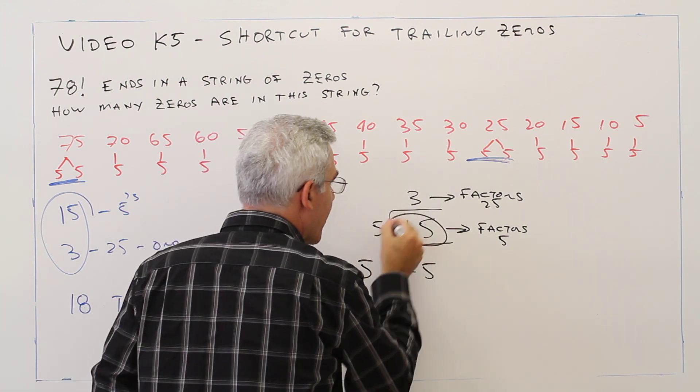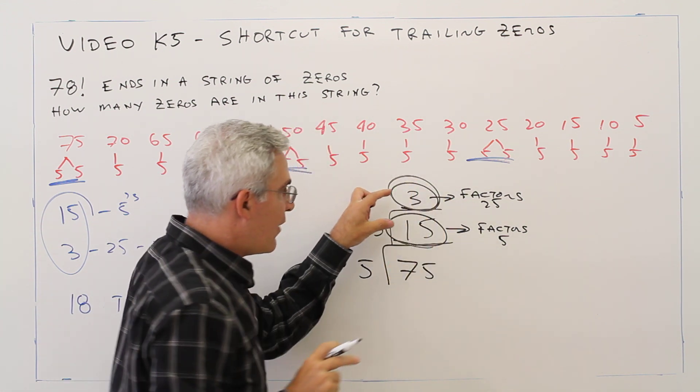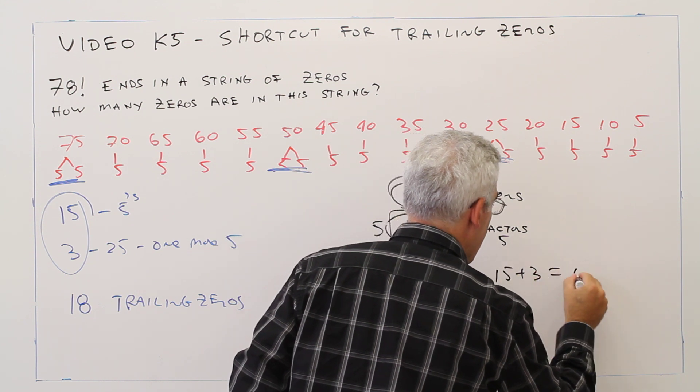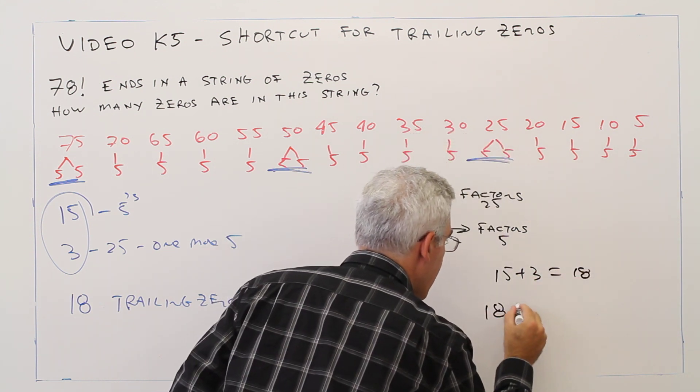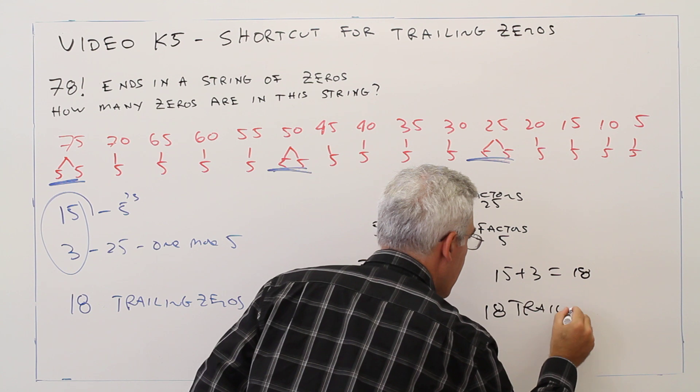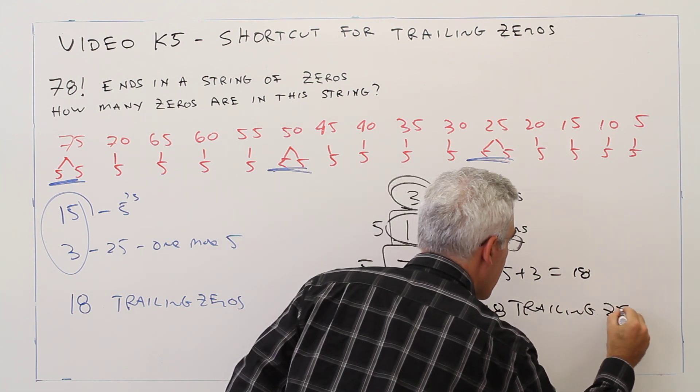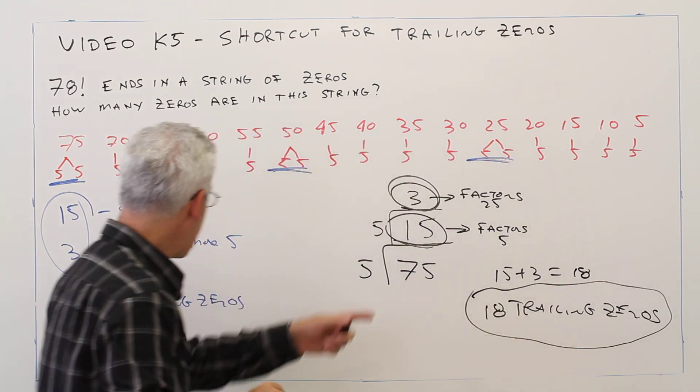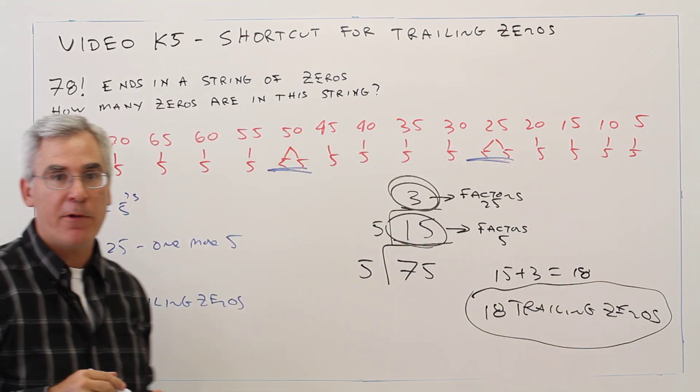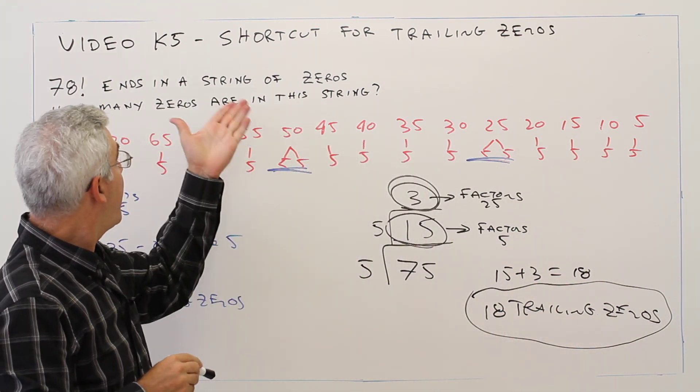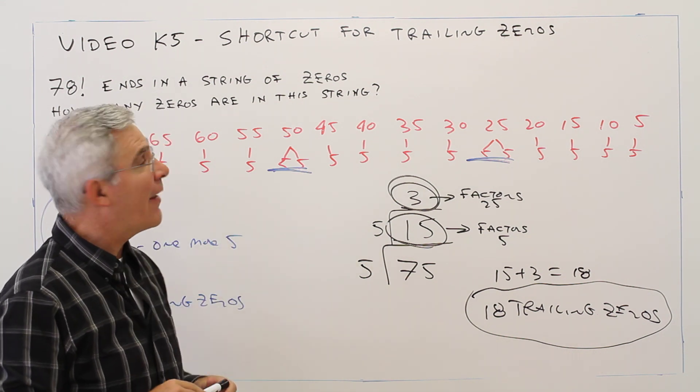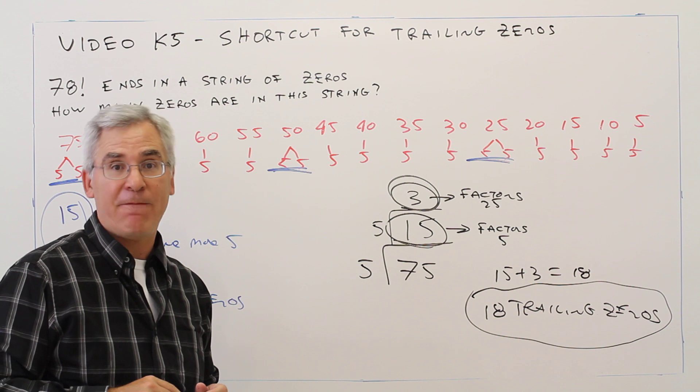So what's important to do is just add those two numbers. So 15 plus 3 equals 18. And that's much shorter than having to write everything out. So there you have it. How to use a shortcut to find the number of trailing zeros in a factorial problem.